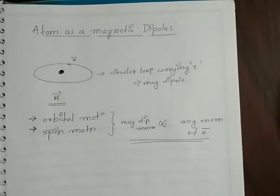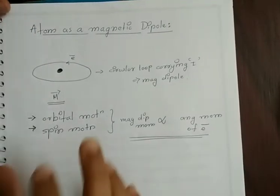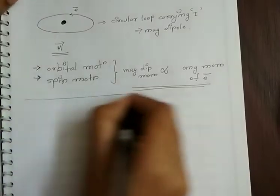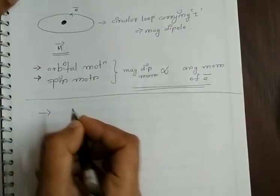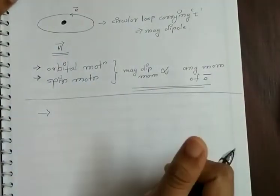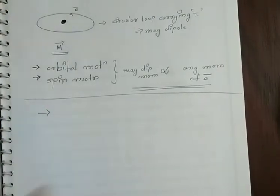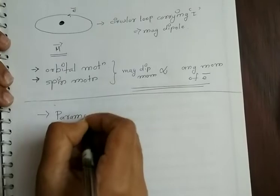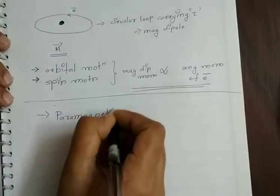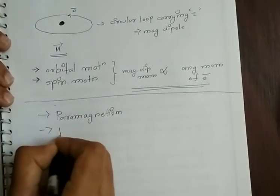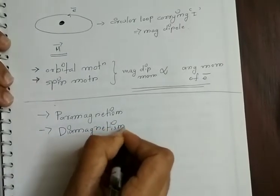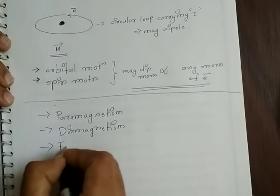Now depending upon the behavior of a matter placed in an external magnetic field, their properties can be divided into three. Whenever a material is placed in an external magnetic field, it can show three important properties: first is paramagnetism, second is diamagnetism, and third is ferromagnetism.